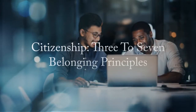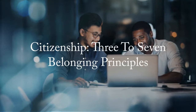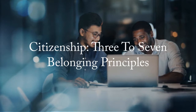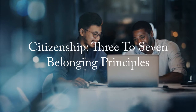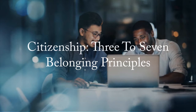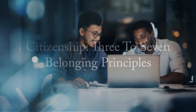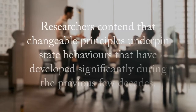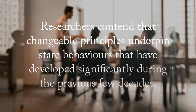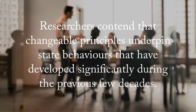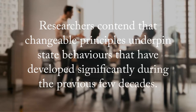Citizenship: three to seven belonging principles. Abstract: researchers contend that changeable principles underpin state behaviors that have developed significantly during the previous few decades. Conventionally, three rules are claimed to control citizenship recognition: descent, marriage, and birthplace. Researchers dispute whether these are laws at all. In addition to these three shifting principles, there are four more principles that control citizenship and social belonging: empire, price, transnationalism, and co-presence. All are discussed and contextualized with an emphasis on a few modern cases.